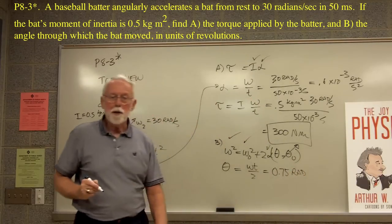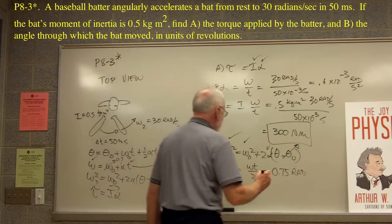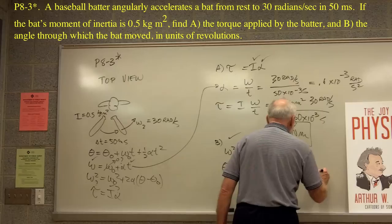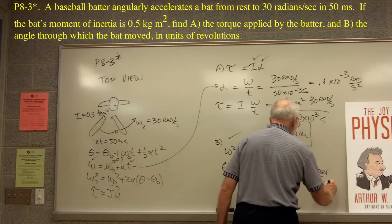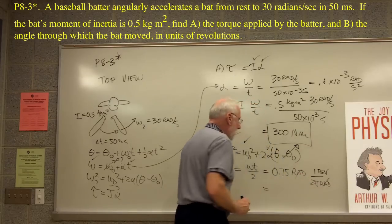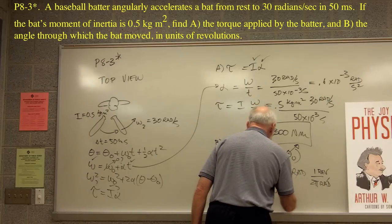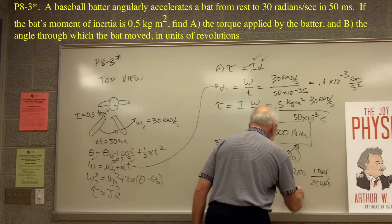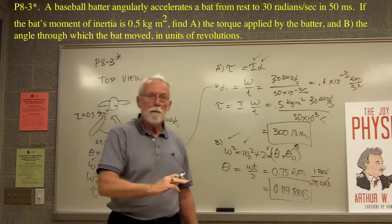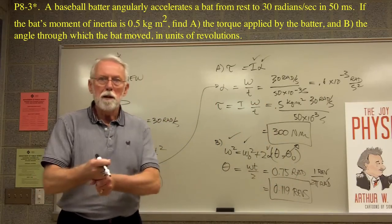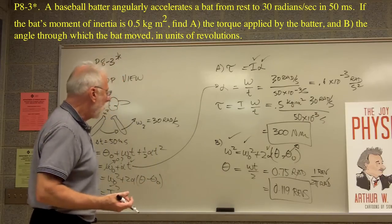But that's not what the problem asked. We wanted to know what it was in terms of revolutions. So, then we have to use our little conversion factor and say, times one revolution divided by two pi radians. Now, the radians cancel. And so, this turns out to be 0.119 revolutions. So, the bat underwent 0.119 revolutions, a tenth of a revolution, a tenth of the way around. That doesn't sound too bad. Maybe about right for baseball. Okay, there it is.